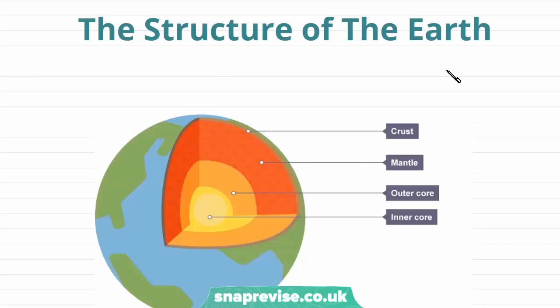The Earth is divided into three main regions: the core, the mantle, and the crust. The core can actually be divided into two separate regions, which is the outer core and the inner core. And then we have our mantle, which is this big section here, and the crust.